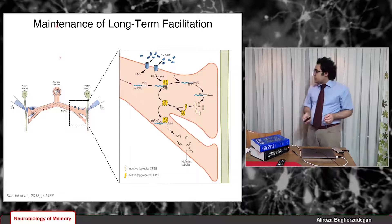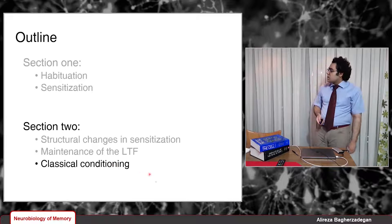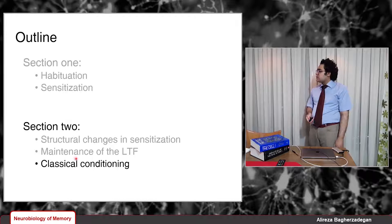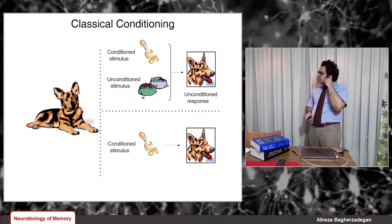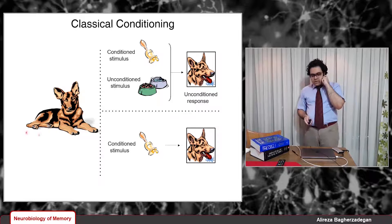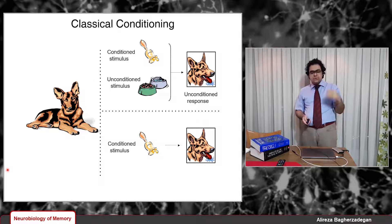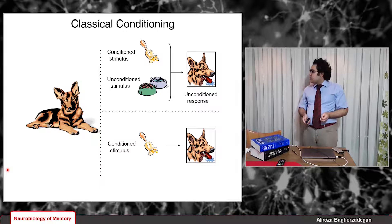Now let's talk about classical conditioning. The concept of classical conditioning was first introduced by a Russian physiologist called Pavlov, who came up with the idea through his experiments with dogs. Classical conditioning, like sensitization, involves two types of stimuli. We have a conditioned stimulus — the weaker one, like a tone, a beam of light, or a tactile touch — and an unconditioned stimulus, which is our strong stimulus, such as food or electric shock.